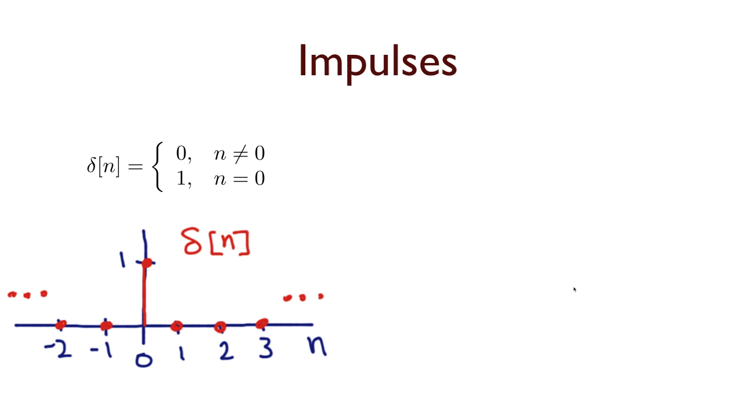Now, impulses represent perturbation. And again, the discrete time case is very easy to define. The discrete time impulse, which we'll denote by delta(n), is exactly zero when n is not equal to zero. And it will be one when n is equal to zero. So, that gives us this kind of a graph. This signal is zero, zero, zero, zero. Boom! Sudden perturbation. And then zero, zero, zero, zero thereafter.